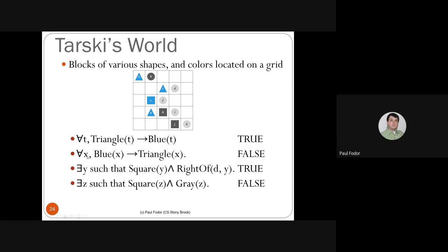'For all X, blue(X) implies triangle(X)' says all blue geometric objects are triangles. We can immediately find a counterexample: E is blue but not a triangle. Therefore this universal conditional statement is false. We found a counterexample — the geometric object E.